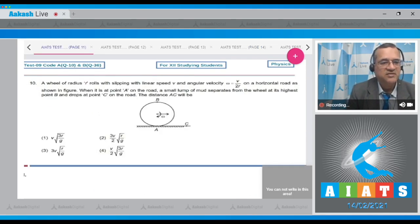Question number 10 is a wheel of radius r rolls with slipping with linear speed v and angular speed omega = v/2r on the horizontal road as shown in figure. When it is at point A on the road, a small lump of mud separates from the wheel at the highest point B and drops at point C on the road. The distance AC is. Now this is rolling with slipping and the velocity of this point will be one because of center of mass which is v and second due to the rotation that equals omega r. This is v + omega r equals v + v/2r times r, so this becomes equal to 3v/2.